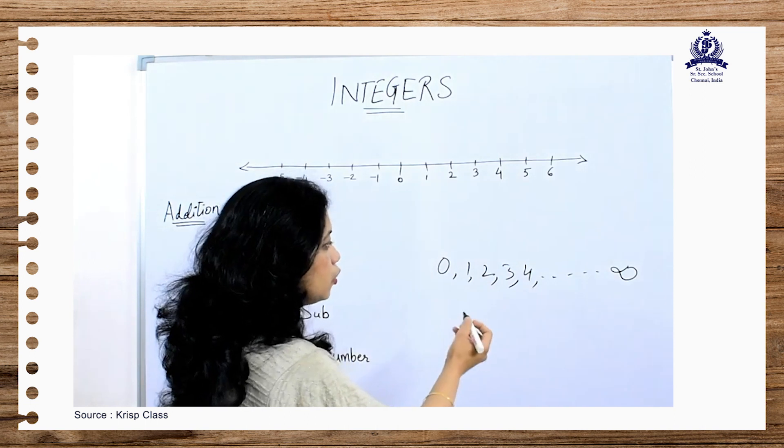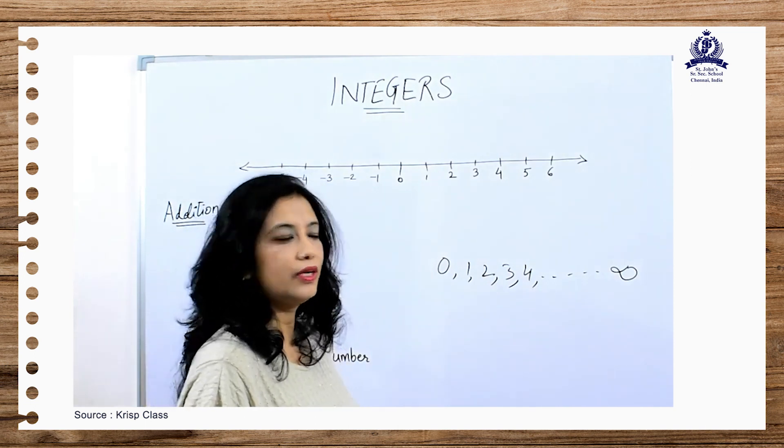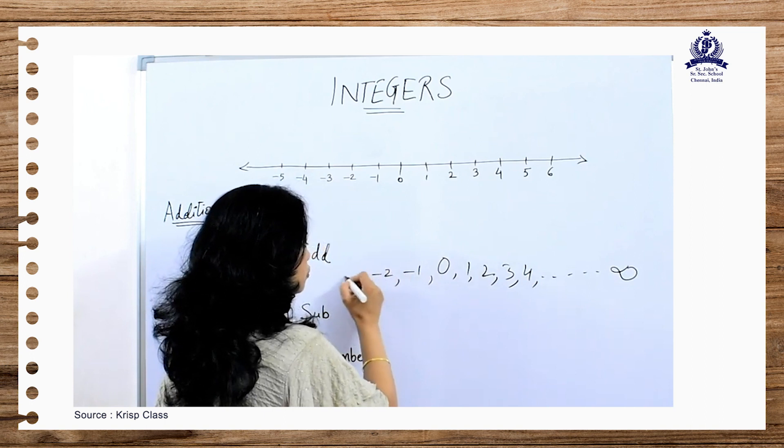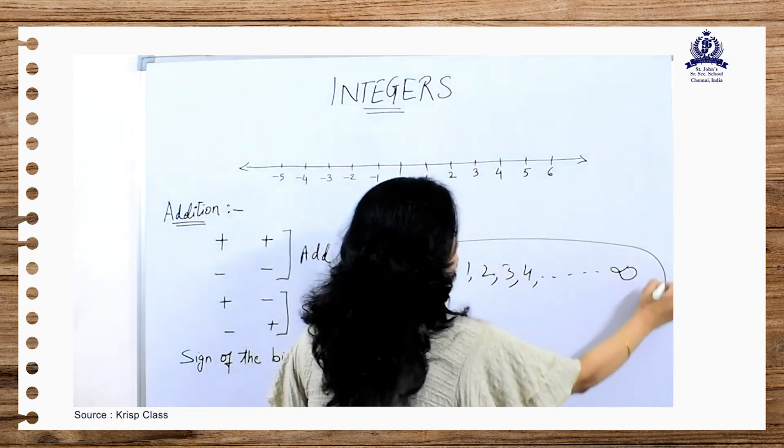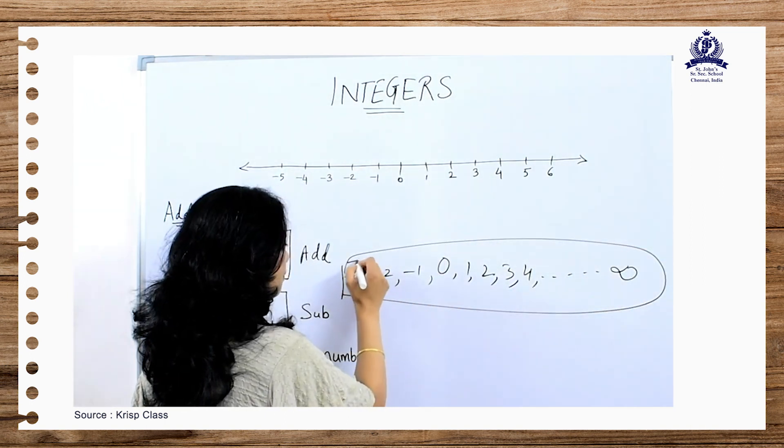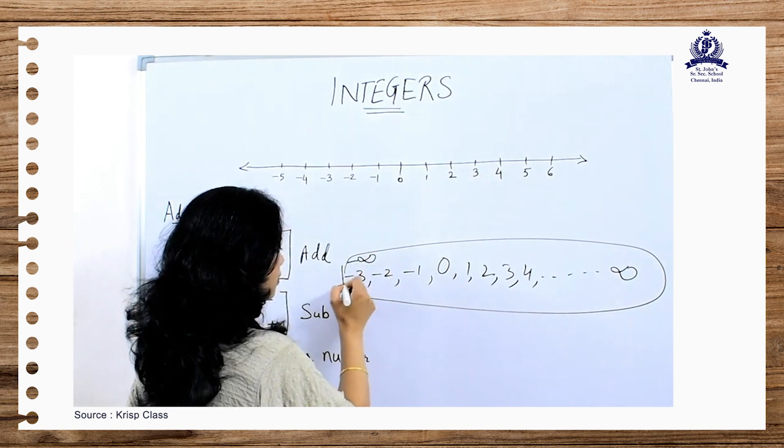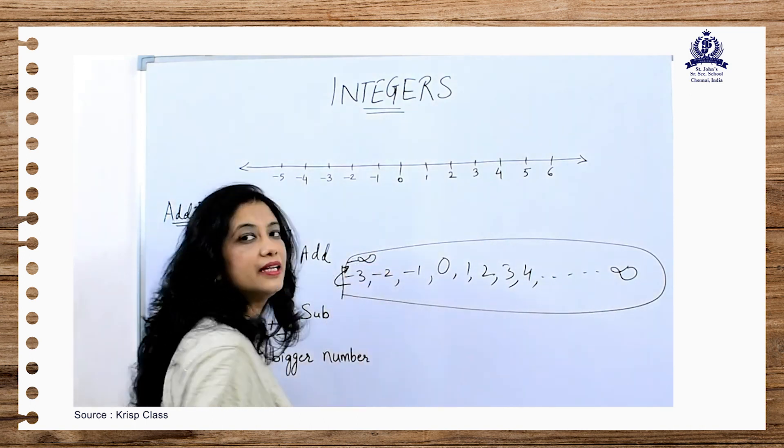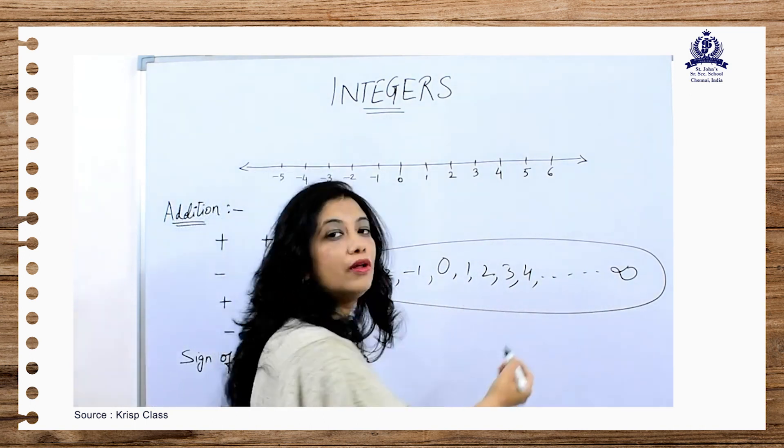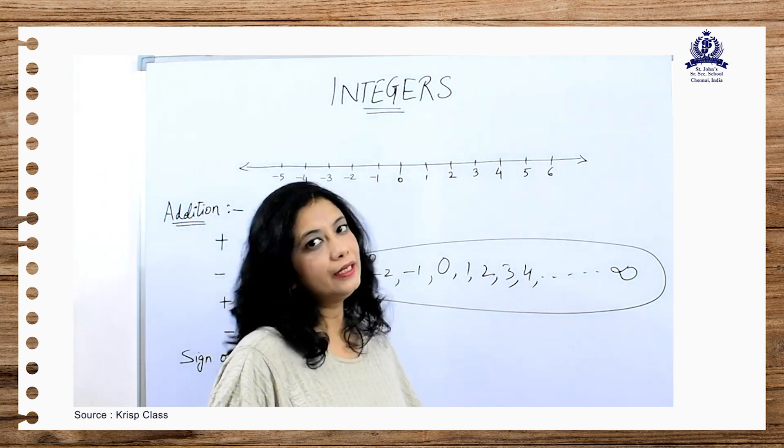Now when we include the negatives of these whole numbers like minus 1, minus 2, minus 3, these continue till minus infinity. The set of all these numbers are called integers.